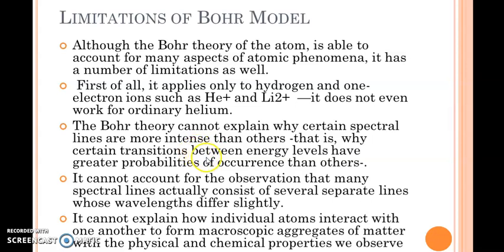If the lines are different in intensity, the corresponding probability of transition is different. The Bohr theory cannot explain why certain transitions are more probable than others. Certain transitions between the energy levels have greater probabilities of occurrence. The intensity of the spectral lines depends on the probability of transition, which the Bohr theory cannot explain.